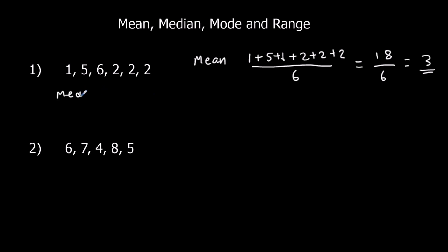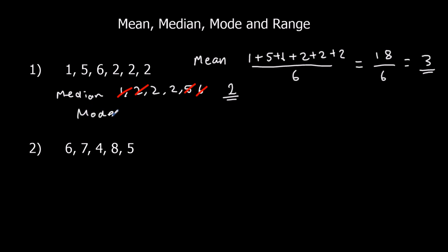The median is the middle number. In order: 1, 2, 2, 2, 5, 6. The middle — there isn't one in the middle, so we go halfway between the two middle numbers. They're both 2, so the median is 2. The mode — the most common number — is 2. There are three 2s. And the range: 6 take away 1 is 5.